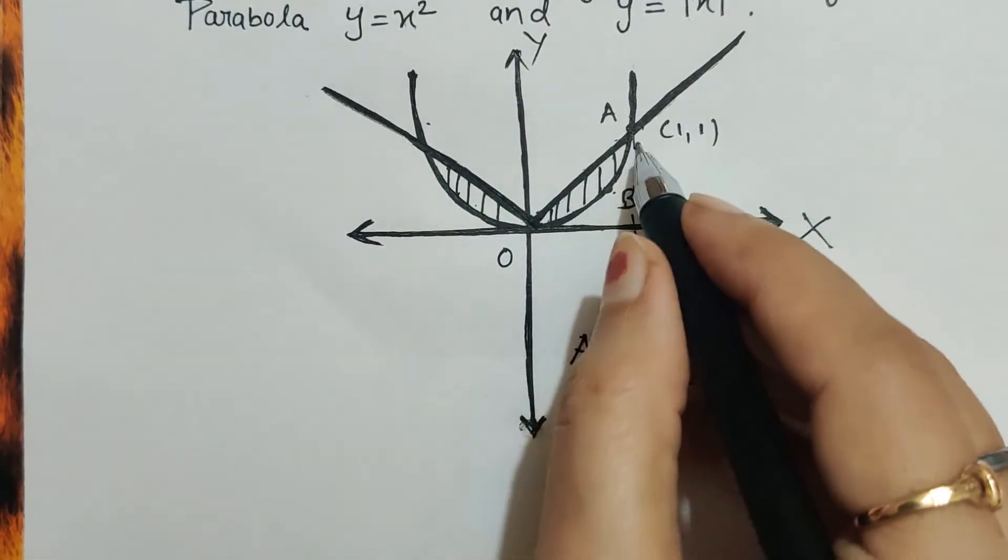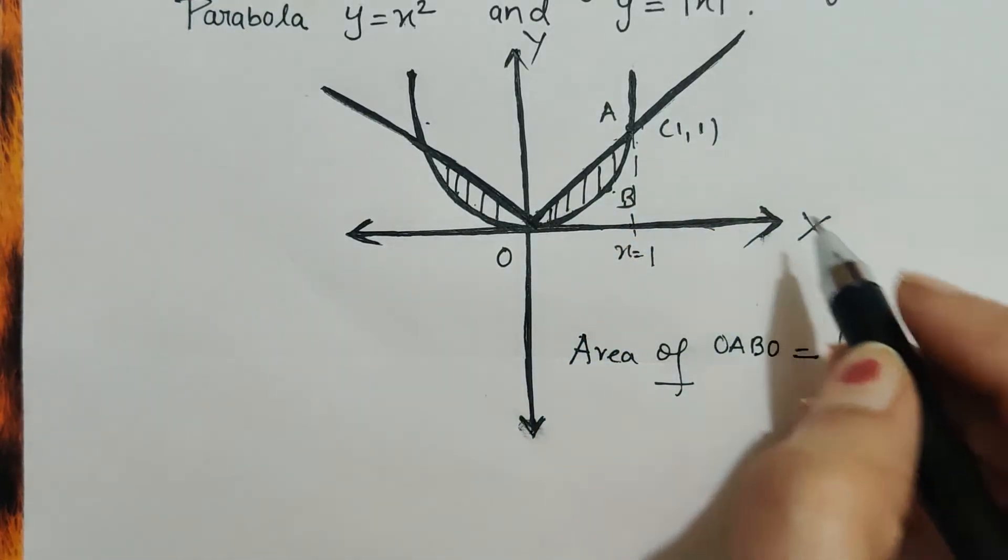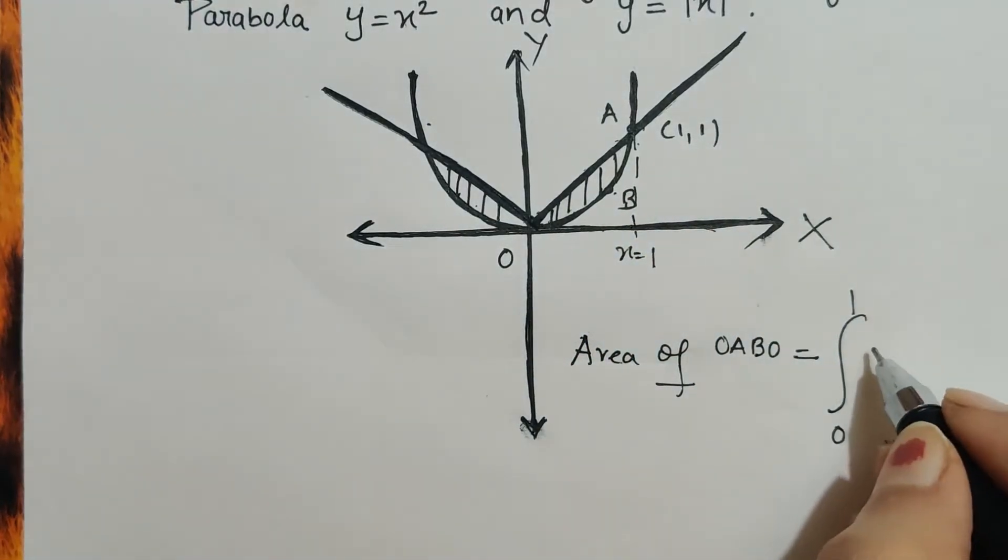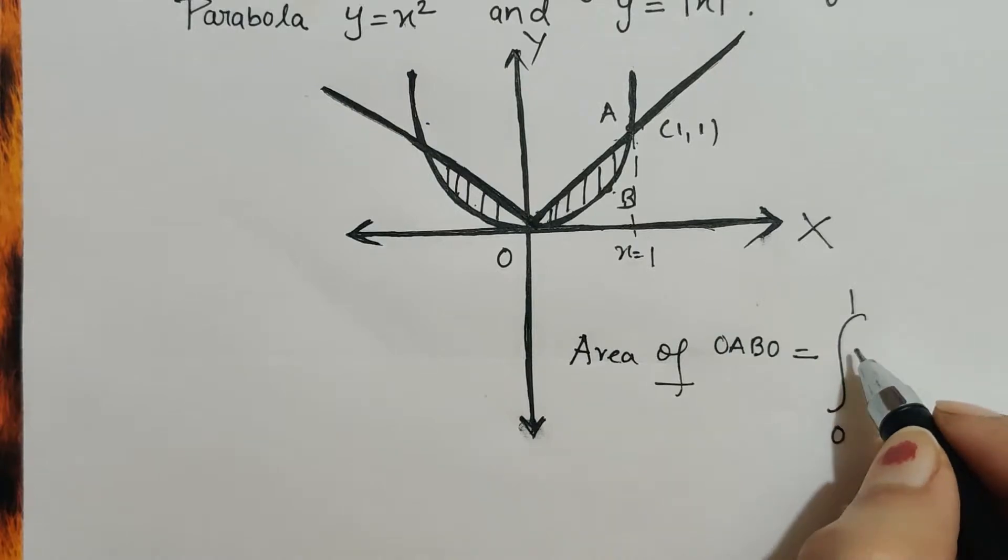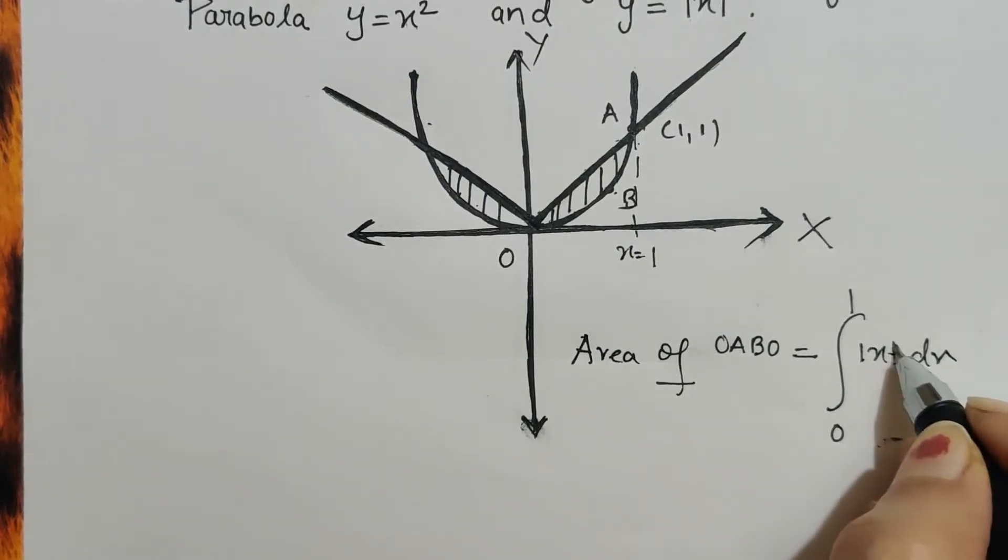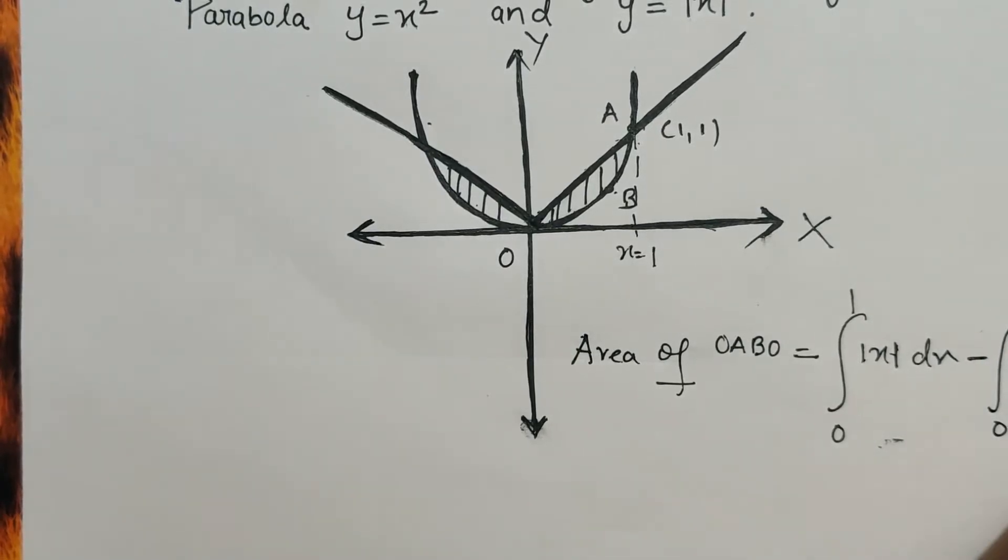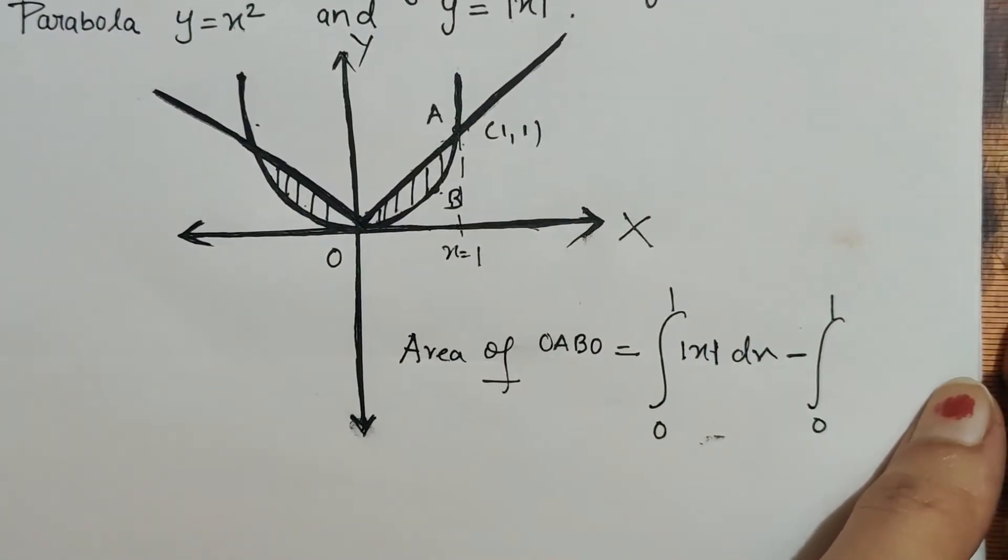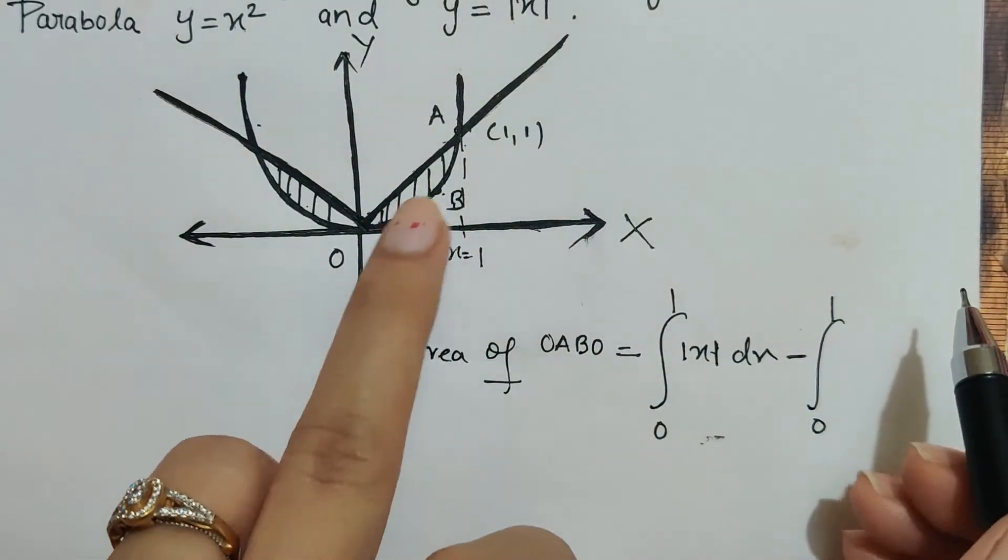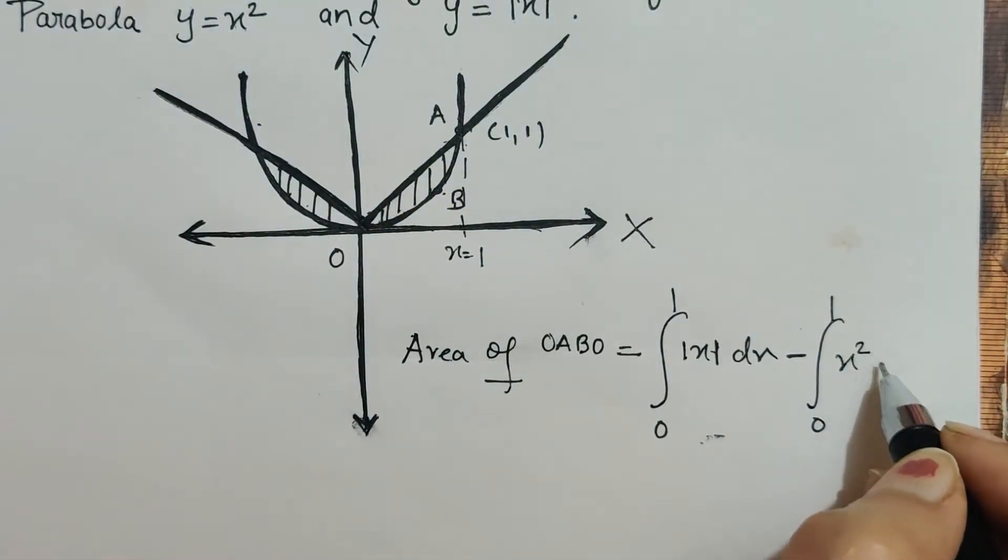So equation of this line minus equation of the parabola. So equation of the line is y equals mod x. So here we will write integral 0 to 1 mod x dx minus integral 0 to 1 x square dx.